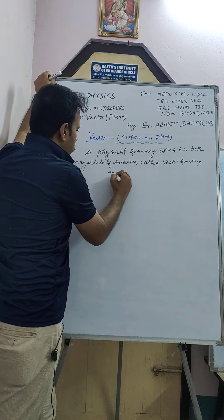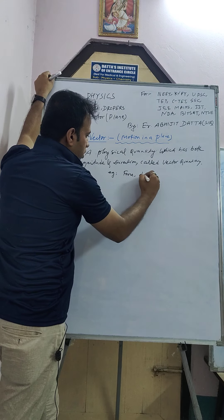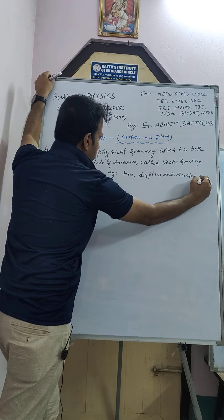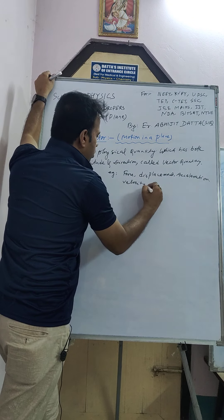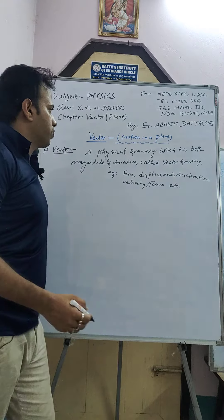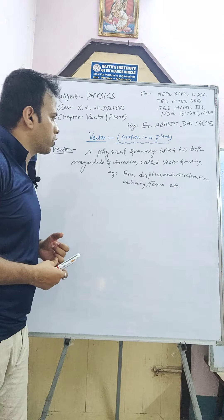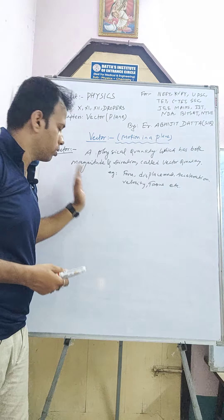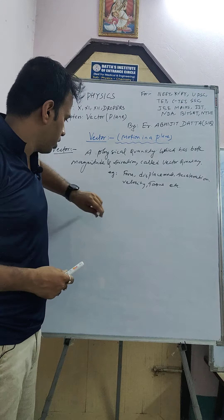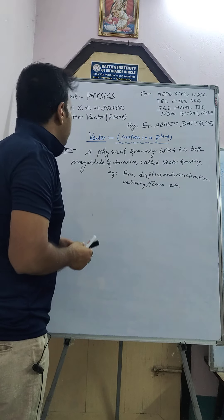Examples of vector quantities are force, displacement, acceleration, velocity, torque, et cetera. So what is a vector? A vector is a physical quantity which has both magnitude and direction. For example, force has a direction as well as magnitude. Suppose I applied force on the board — the magnitude of the force is 50 Newton and the direction is towards the board. So force has both magnitude and direction.